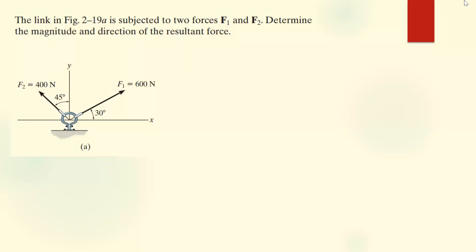The question says the link in figure 2.19F is subjected to two forces, F1 and F2. We need to determine the magnitude and direction of the resultant force. To do this, we first have to resolve these forces into their respective components, add up the components, and then find the resultant using the formula.